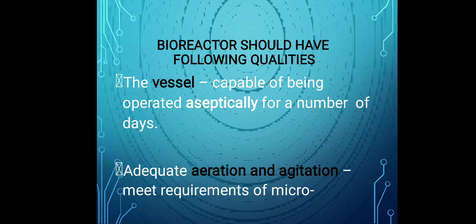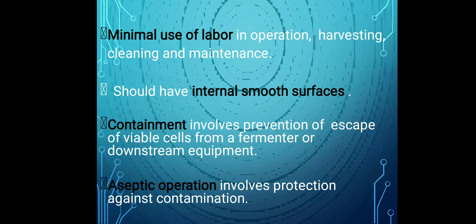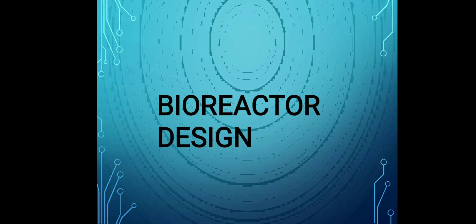Bioreactors should have the following qualities: capable of being operated aseptically for a number of days; adequate aeration and agitation to meet the requirements of microorganisms; power consumption as low as possible; temperature and pH control provided; sampling facilities provided; evaporation losses not excessive; minimum labor use; and smooth internal surfaces. Contamination prevention and protection against escape of viable cells from the fermenter are essential.